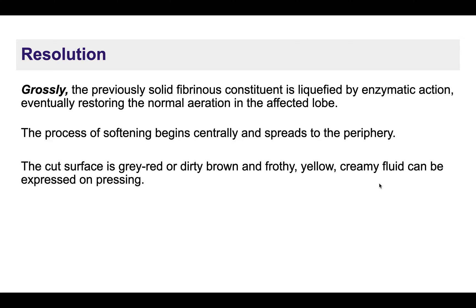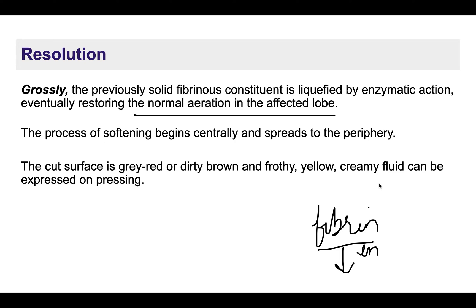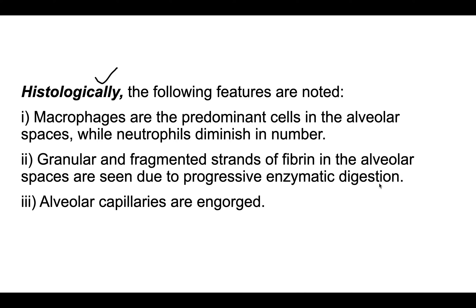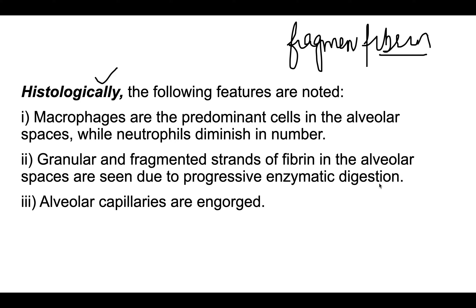The last phase is resolution, where the lobe — previously liver-like and airless — restores its normal aeration. The fibrin formed is digested by enzymes, dissolving it and restoring normal airflow. This process begins centrally and spreads to the periphery. Histologically, granular fragmented strands of fibrin are visible. Macrophages are present, neutrophils are very low, and capillaries are slightly engorged again.